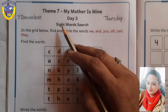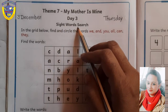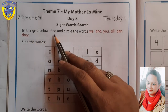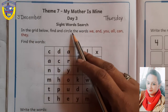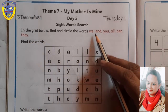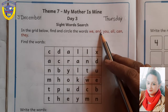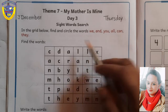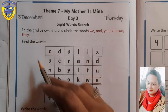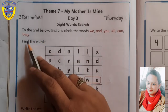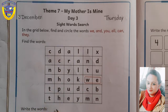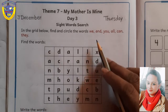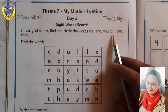Students, today we are going to do sight words search. In the grid below, find and circle the words: we, you, all, can, they. So, let's start. Find words with me. From this grid, we will find out these sight words.